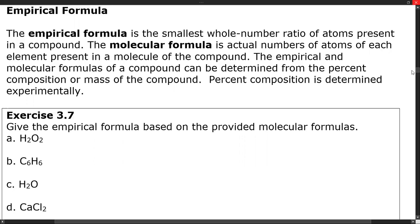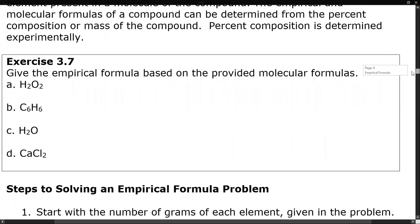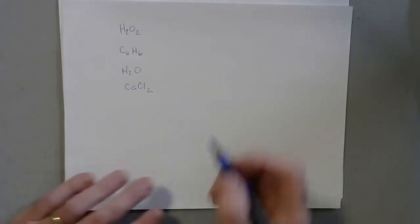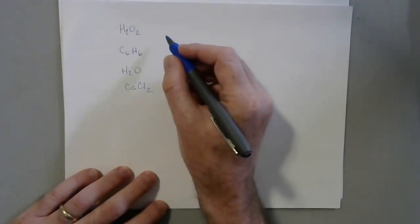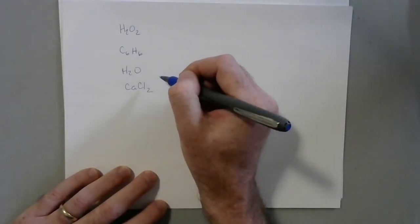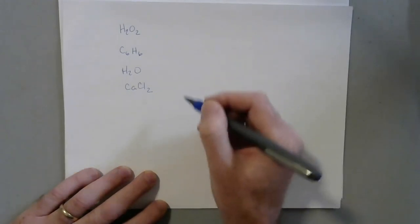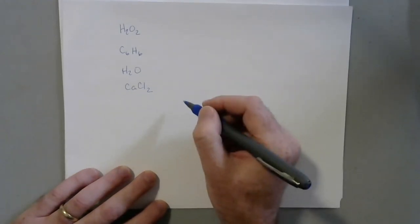We're going to look at this example — these are molecular formulas — and then convert them to empirical formulas. It's a little bit more difficult to do that backwards, as you'll see. Looking at the formulas for several of these compounds, we want to know if we can create a simpler empirical formula.